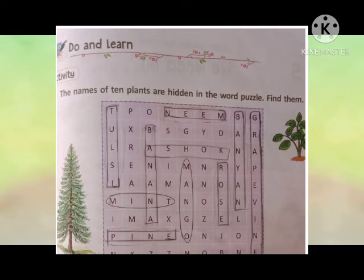Now, children, see your activity. In your testbook, page number 151, you have to do this exercise. You have to find out the 10 plants that are hidden in the word puzzle — yaani 10 plants ki name hai, wo is puzzle mein se aapko find out karke circle karna hai. Two are already given: mango and mint.